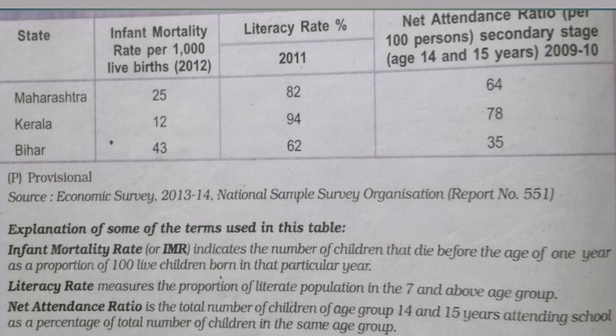When it comes to infant mortality rate, the infant mortality rate in Maharashtra is 25 whereas in Kerala it is just 12. Infant mortality rate means the number of children who die before the age of one year in proportion to 100 live children in that year. As far as literacy rate is concerned, the literacy rate in Maharashtra is 82 percent whereas in Kerala it is 94 percent. So Kerala is way ahead in spite of a low per capita income.